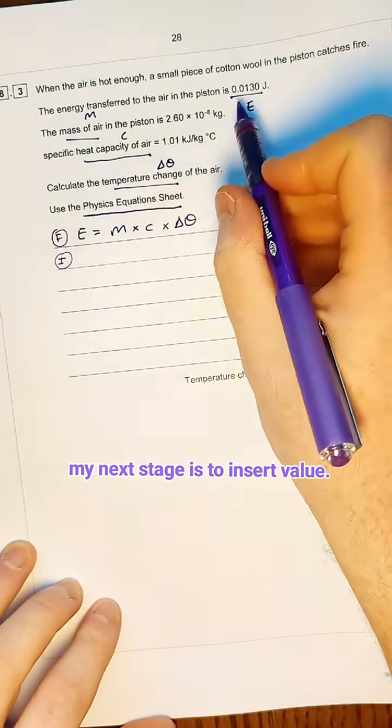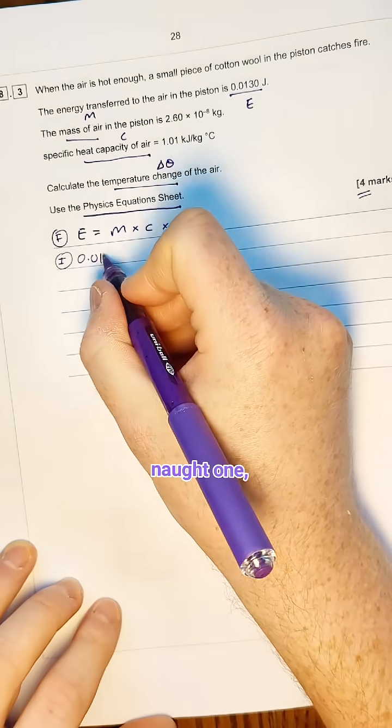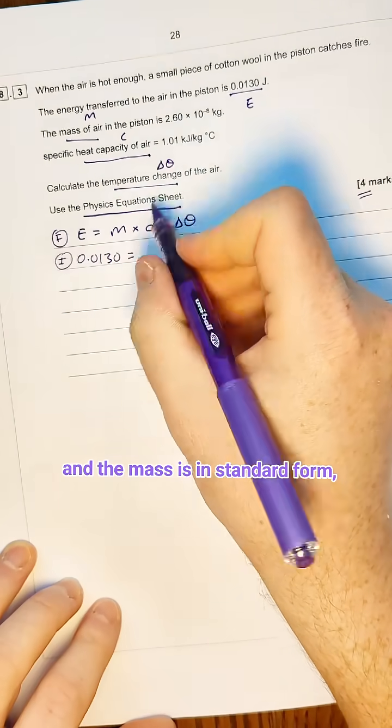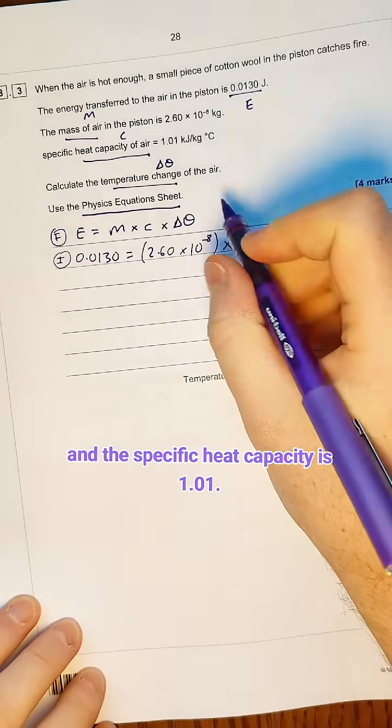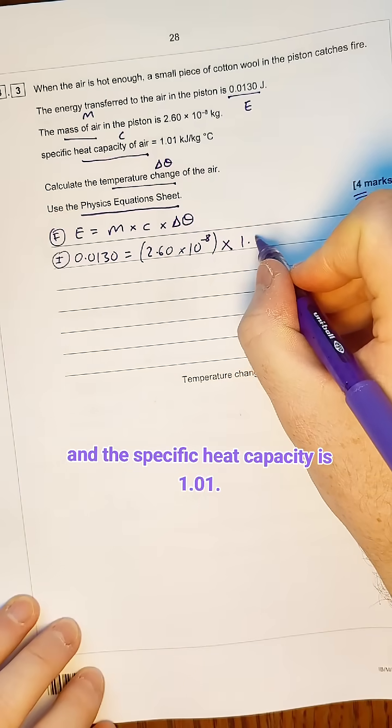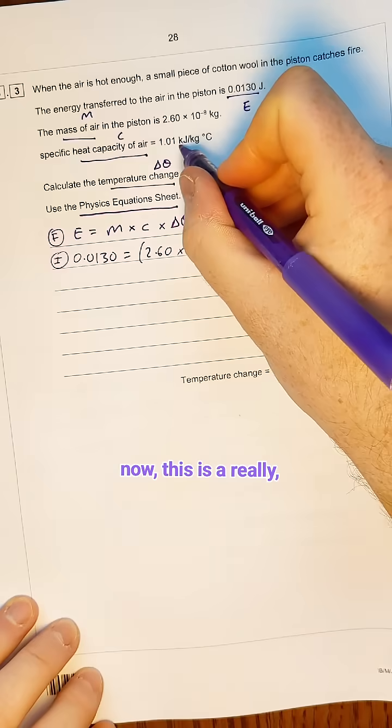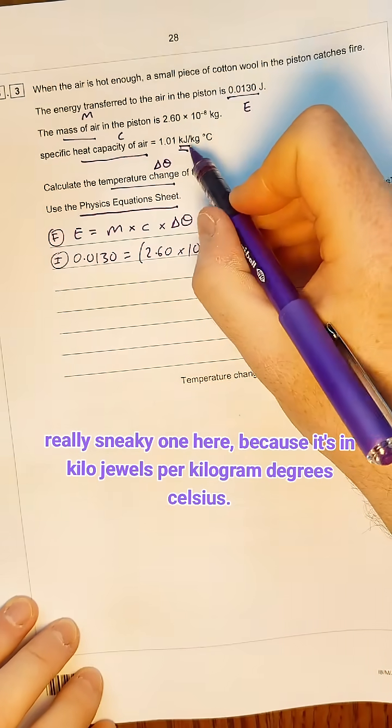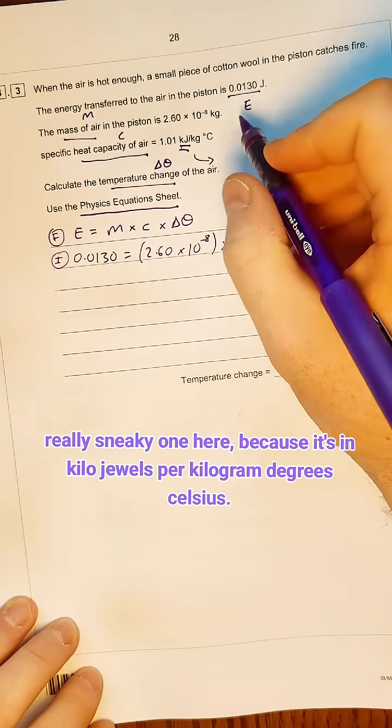My next stage is to insert values. So I'm going to do 0.0130, and the mass is in standard form, and the specific heat capacity is 1.01. Now this is a really sneaky one here because it's in kilojoules per kilogram degree Celsius.